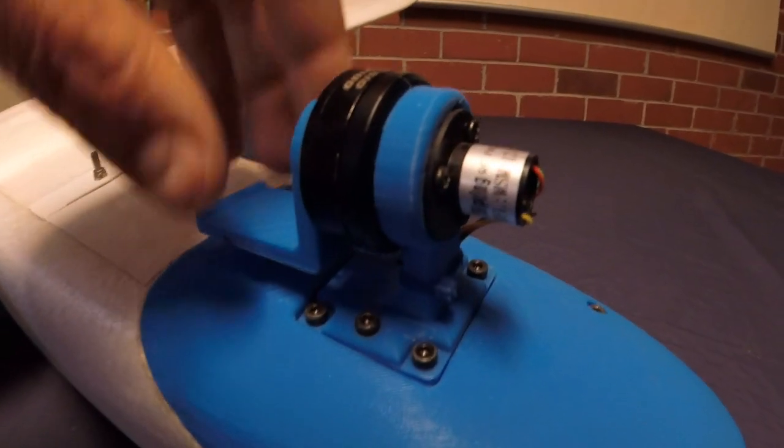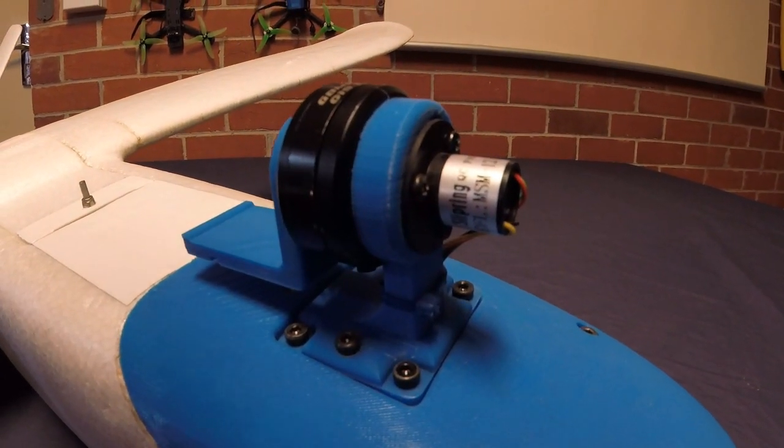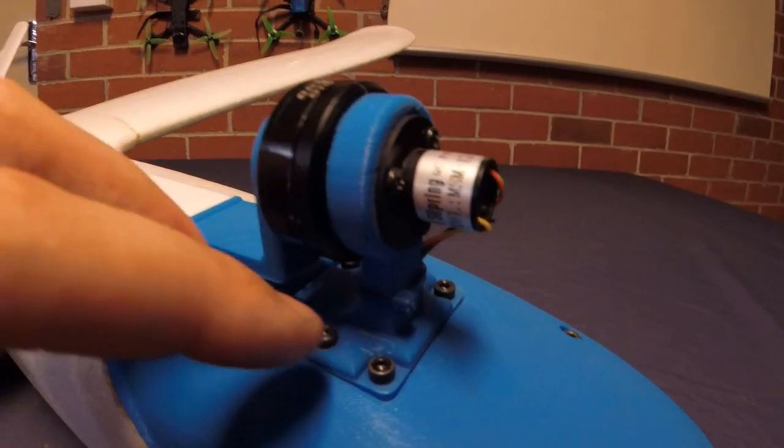I used to have a gimbal like this mounted directly onto a 360 servo, but I found it was a little bit too much for the servo horn and I managed to break one off. So now I'll just stick with this fixed version.